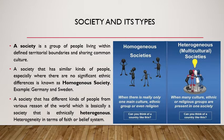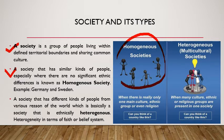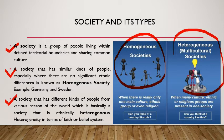What is society? A society is a group of people living within defined territorial boundaries and sharing a common culture. A society with similar kinds of people, especially where there are no significant ethnic differences, is known as a homogeneous society — for example, Germany and Sweden. Contrary to this, a society with different kinds of people from various parts of the world is ethnically heterogeneous, showing heterogeneity in terms of faith or belief system.